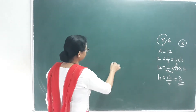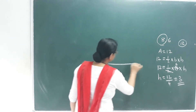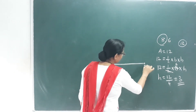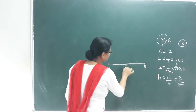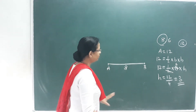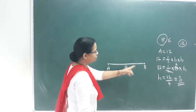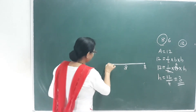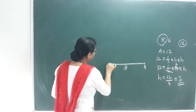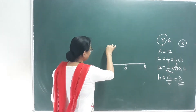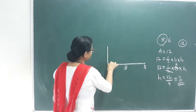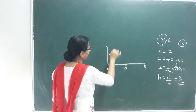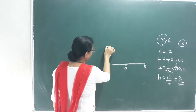So what I am going to do is draw AB = 8 cm. This is height 3 cm. I am going to draw a perpendicular here at height 3 cm from the base AB.